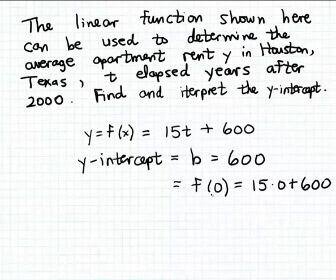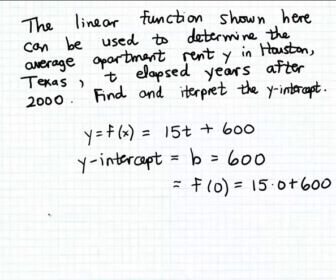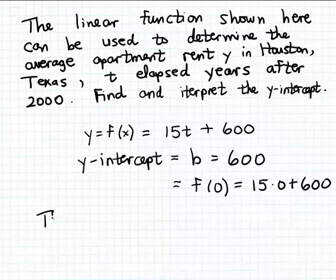Evaluating the function at the input 0 is actually helpful in discovering the practical interpretation of the y-intercept as well. In this example, the output is the apartment rent in Houston and the input is elapsed years after 2000. So using an input of 0 refers to the apartment rent 0 elapsed years after 2000 — in other words, in the year 2000. The y-intercept tells us that in the year 2000, the average apartment rent in Houston, Texas was $600.